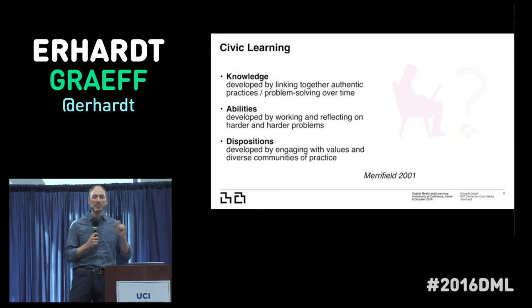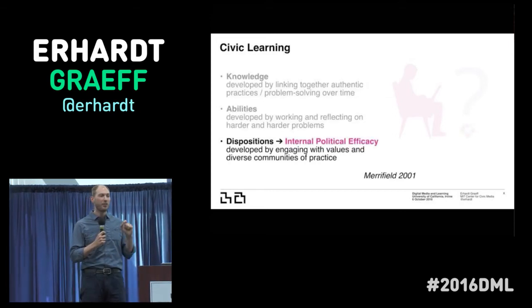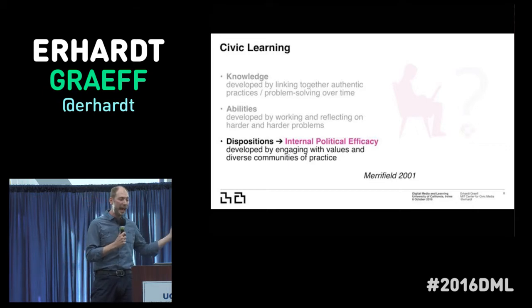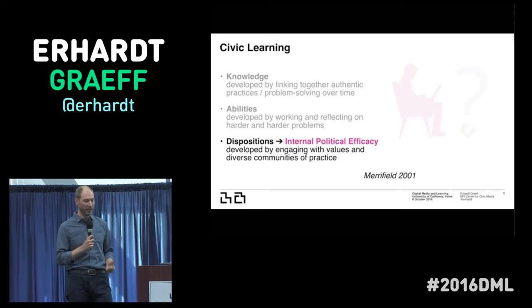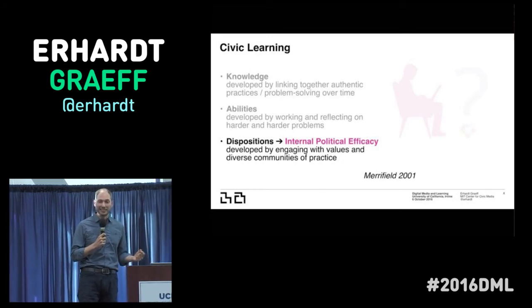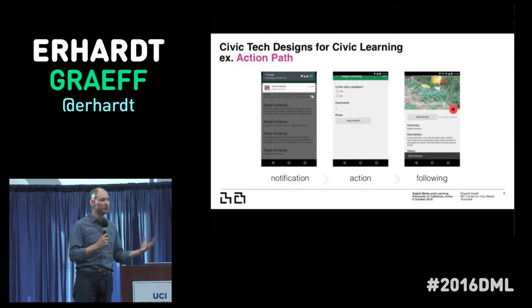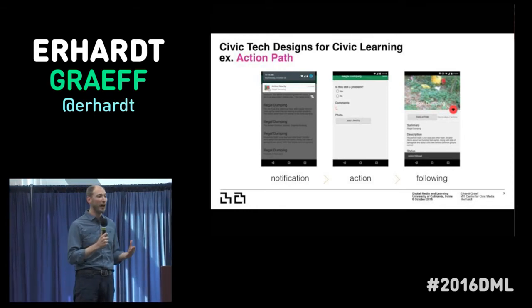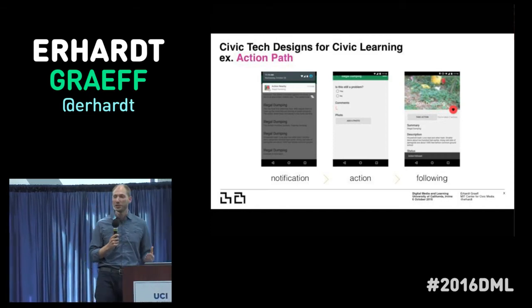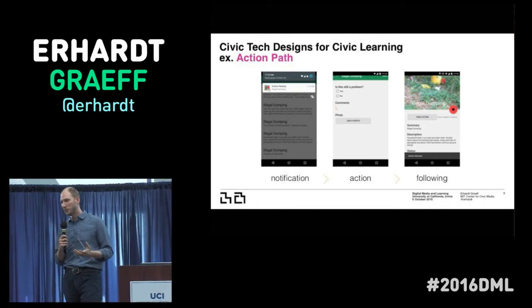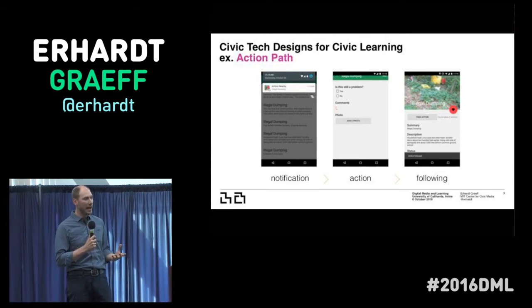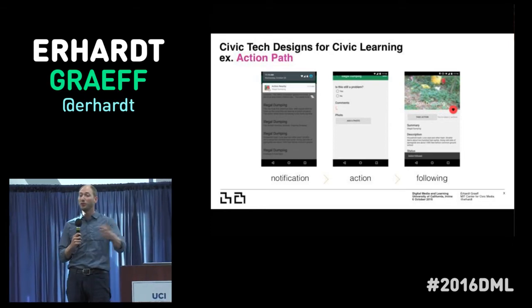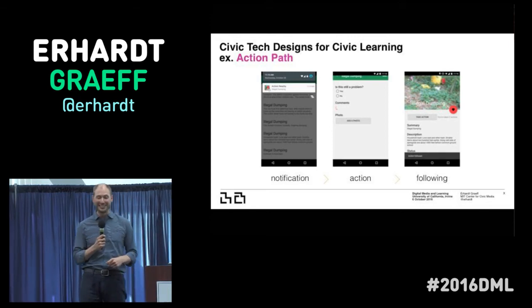I think this is critical, because without a disposition for civic action — this sense of wanting to be an agent and the sense that we can be agents of change — we don't have the internal political efficacy that allows us to activate that knowledge and abilities in productive ways. So how do we do that as a designer? I'm also a civic technologist, and I designed a tool called Action Path — a mobile app that invites people to participate in local issues. As you're walking down the street, you get a notification about a pothole or graffiti that's been reported, and you have an opportunity to update the status of that issue and then follow where it goes, whether it actually gets resolved by the city, closing that feedback loop.